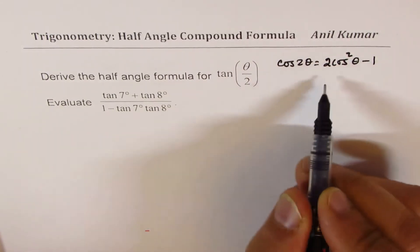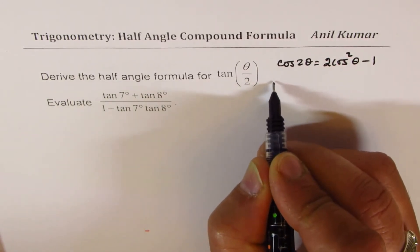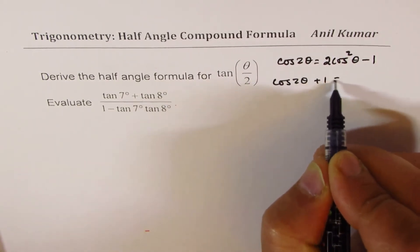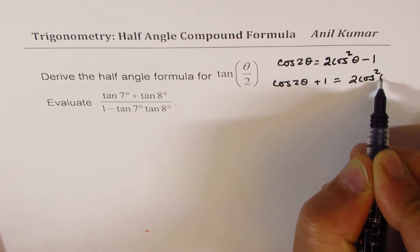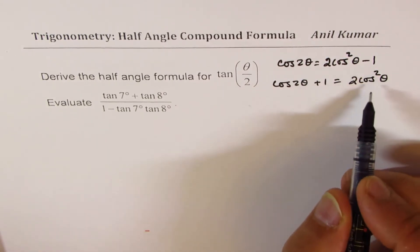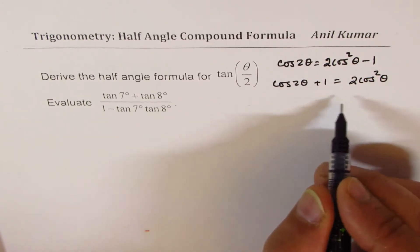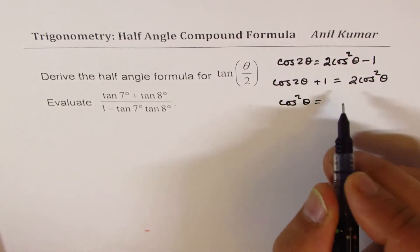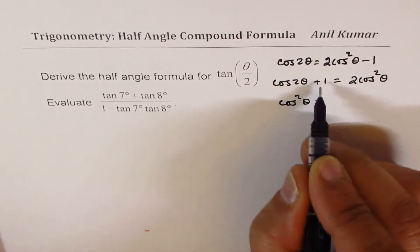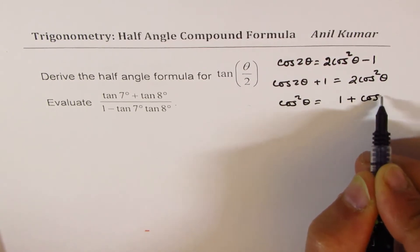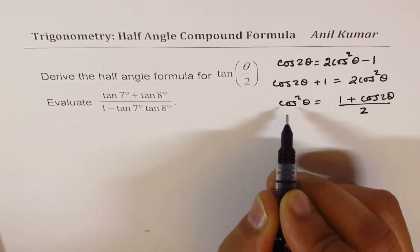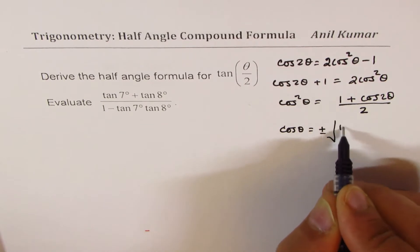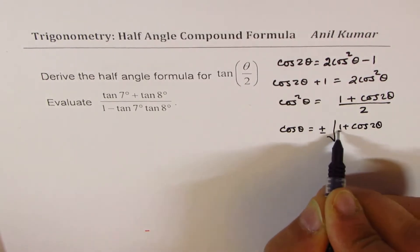We can rearrange this: writing cos(2θ), we bring 1 to this side and write 2cos²θ. To get the value of cos θ, we divide by 2. So we rewrite this as cos²θ equals 1 plus cos(2θ) divided by 2. Then cos θ equals plus or minus the square root of that term, which is (1 + cos 2θ)/2.